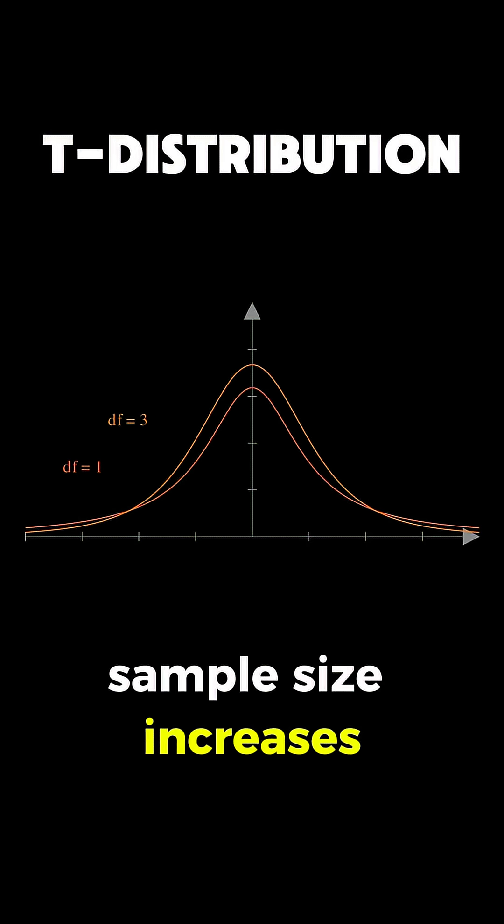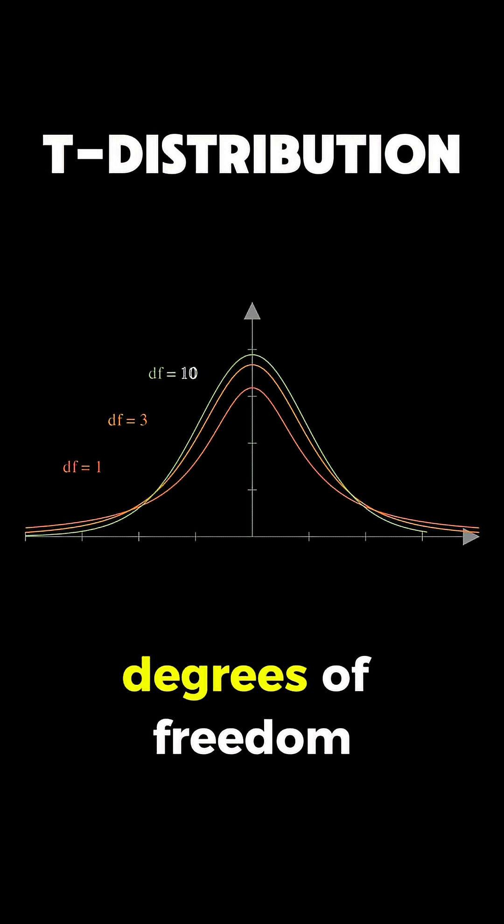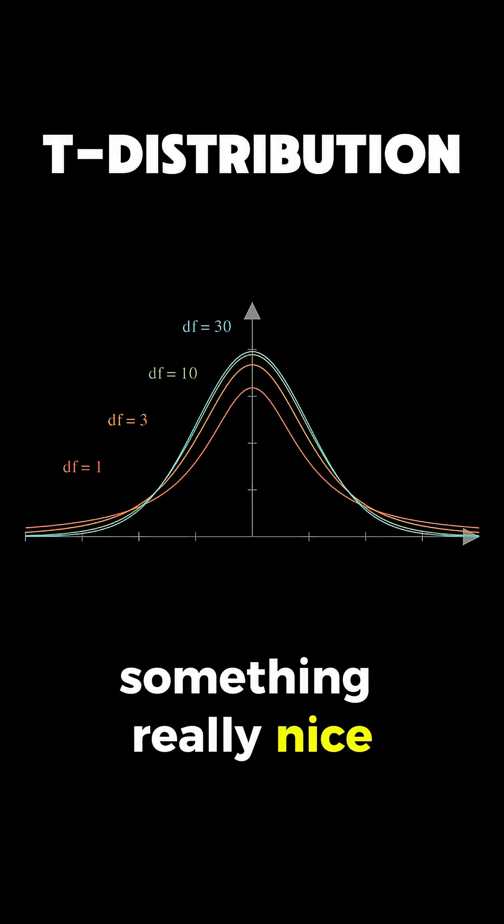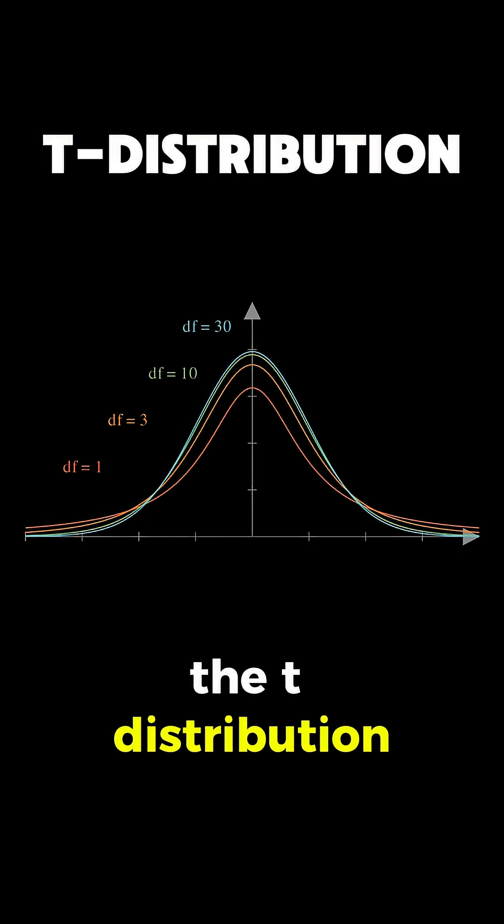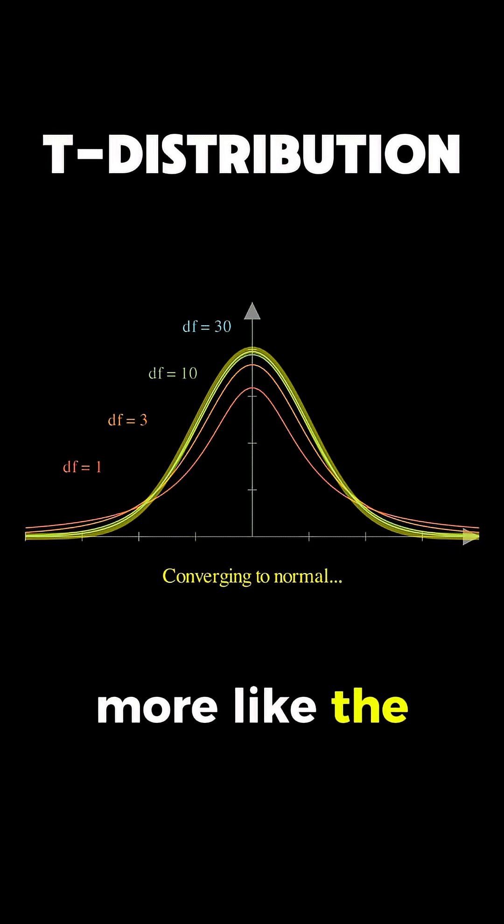As your sample size increases, and therefore your degrees of freedom increases as well, something really nice happens. The t-distribution starts looking more and more like the normal distribution.